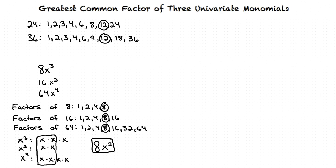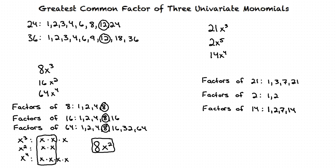Great question. The Common Factor does not need to have both a coefficient and a variable. For our second example, let's find the Greatest Common Factor of these three monomials: 21x cubed, 2x to the fifth, and 14x to the fourth. We start by listing the factors of the coefficients, and we can see that the Greatest Common Factor is just 1. Next, we list x cubed, x to the fourth, and x to the fifth as products of prime factors, as we did previously.